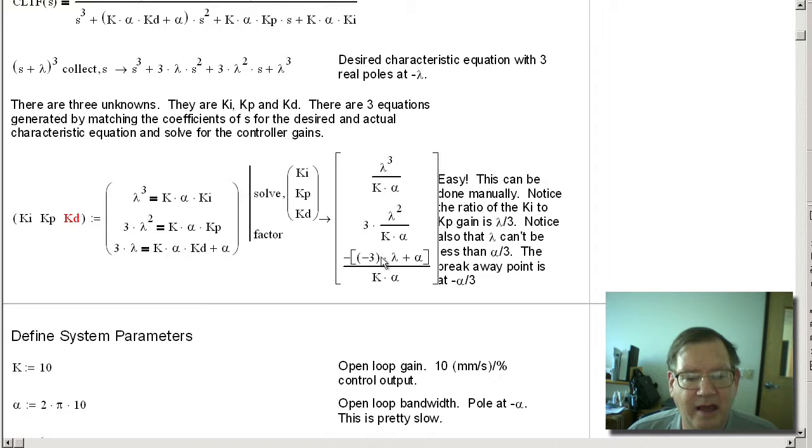And notice that kd can be negative. kd will be negative if the lambda happens to be lower than alpha divided by three. And as it turns out, alpha divided by three is also the breakaway point. So if you want to have a faster response, we can move lambda further to the left, make it more negative. If we need to have a slower response, we need to use an overdamped response where some of the poles are going to be closer to the origin than the breakaway point and some are going to be farther away. But you can see that if you are limited by the breakaway point, it's going to limit the response very much.